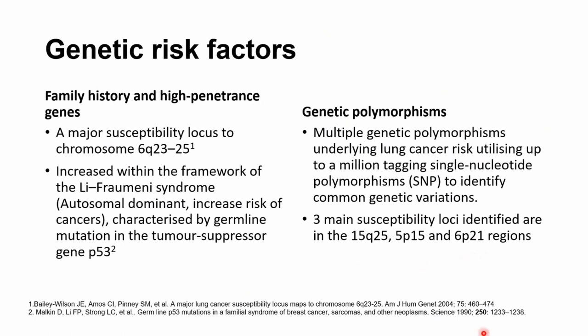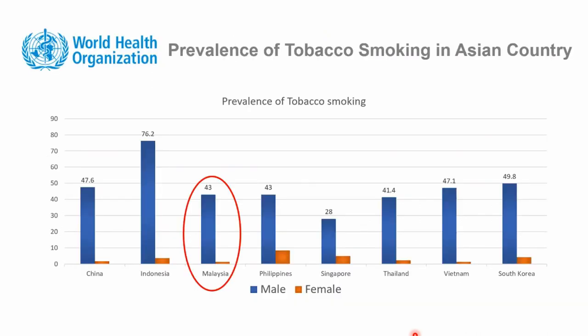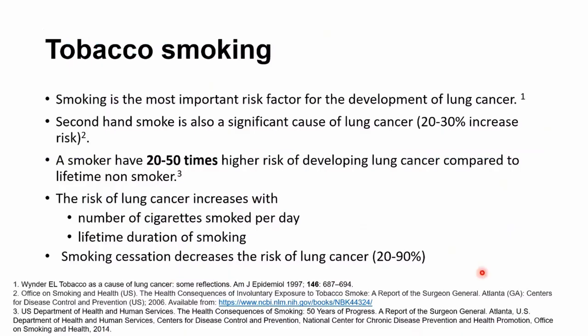Smoking is still the most important risk factor for development of lung cancer. There are many patients who develop lung cancer from secondhand smoke, whereby 20 to 30 percent have an increasing risk of developing lung cancer from secondhand smoke. A smoker has 20 to 50 times the risk of developing lung cancer. Surprisingly, if you stop smoking, this actually decreases the risk of lung cancer by up to 90 percent in certain studies.